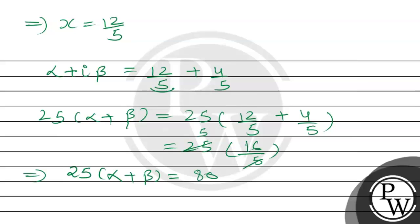So the final answer is 25 times (alpha plus beta) is equal to 80. I hope you understood it well. All the best. Thank you.